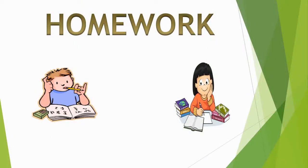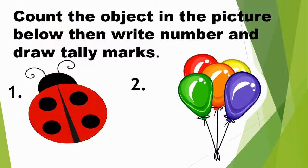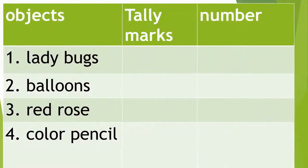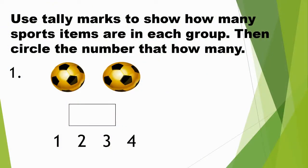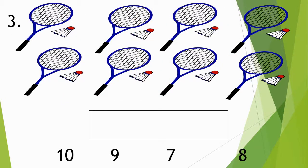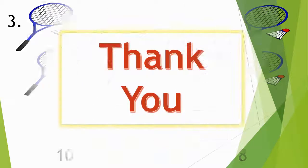Now it's your homework time. Count the objects in the picture below, write the right number, and draw tally marks. Use tally marks to show how many sports items are in each group, then circle the number that shows how many. Thank you.